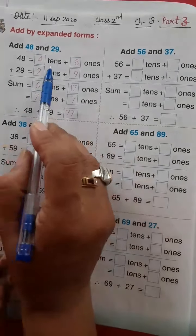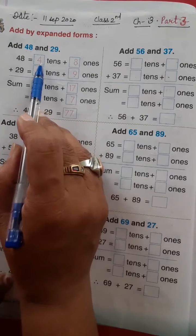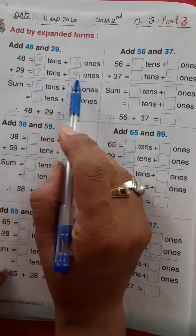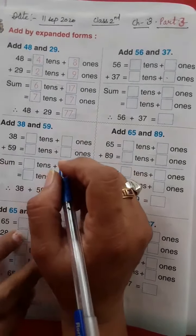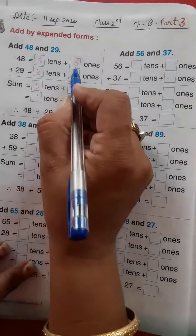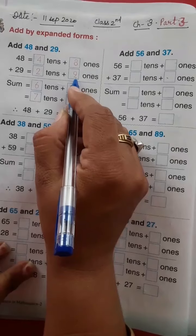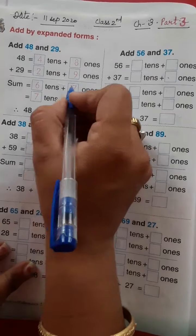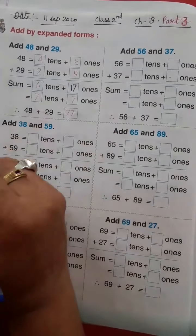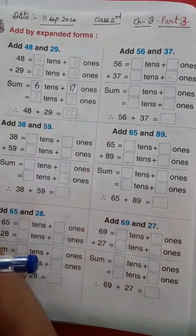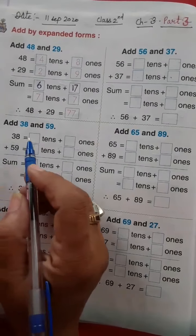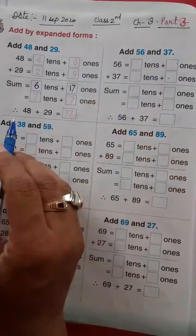Like this, 29: 2 will be written at tens place and 9 will be written at ones place. Now we will add this: 8 and 9, 17. 17 likh diya humne. Ek carry aayega. Ones ki jagah pe kya aaya, 7. 4 and 2, 6. Ab ye carry wala expansion, carry wala addition hai.